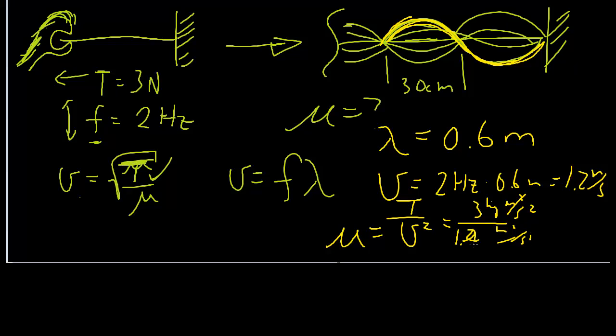And this was 1.44, would give you 2.08 kilograms per meter, which is the unit for your linear mass density.